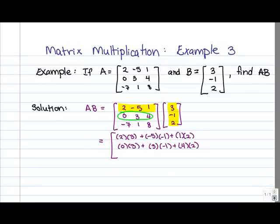Finally, for entry 3, 1, we work with the last row, so the third row of A, and again, the first column in B, and what we have is negative 7 times 3 plus 1 times negative 1 plus 8 times 2.